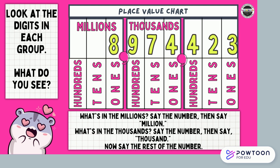Look at the digits in each group — what do you see? What's in the millions? Say the number, then say million. What's in the thousands? Say the number, then say thousand. Now say the rest of the number. Go ahead and try it. Did you say 8,974,423?